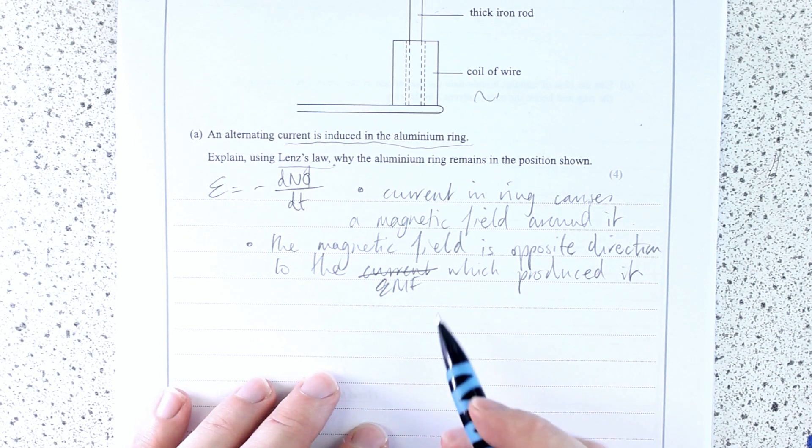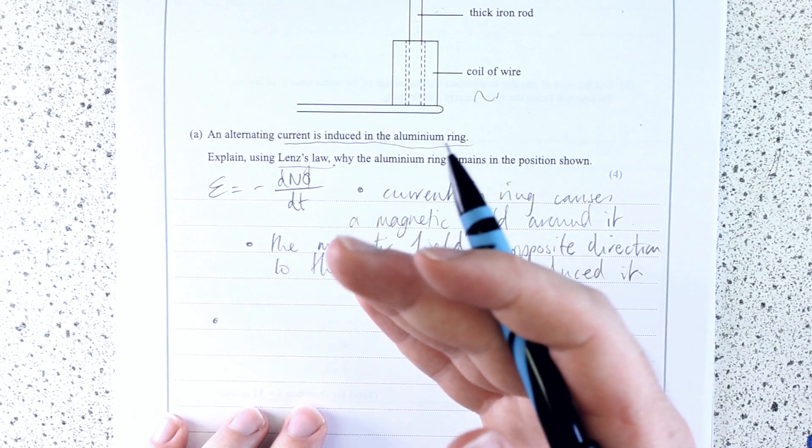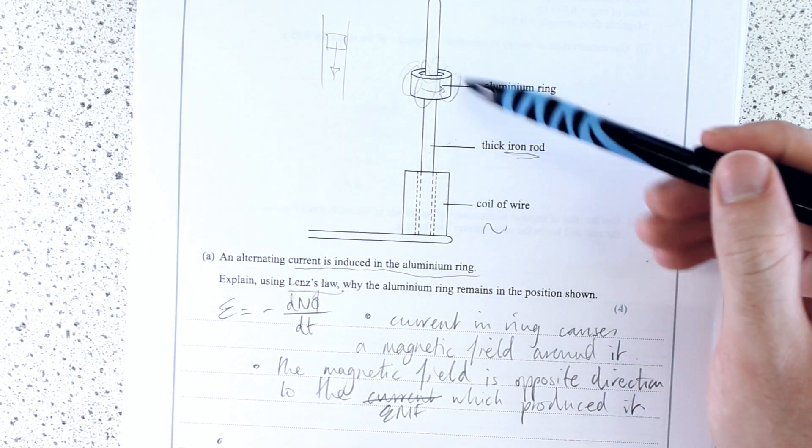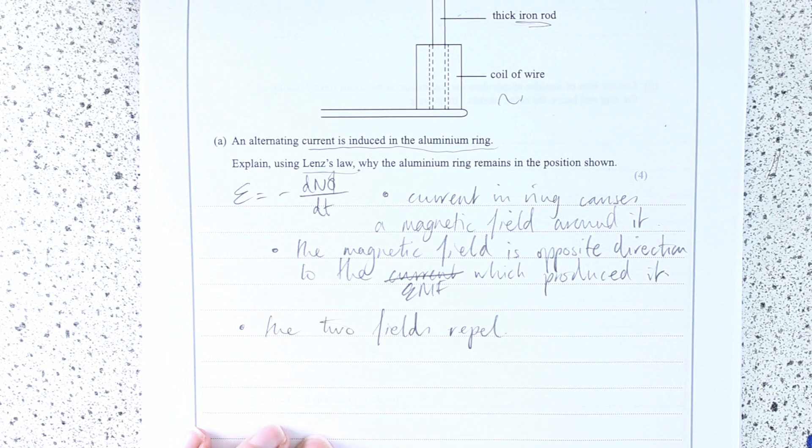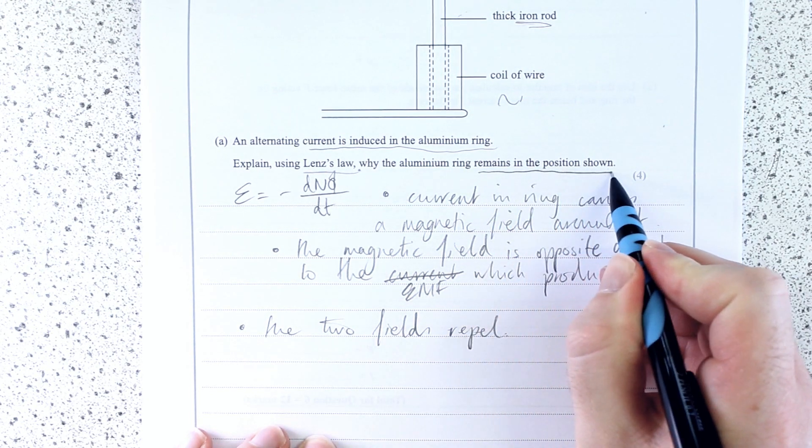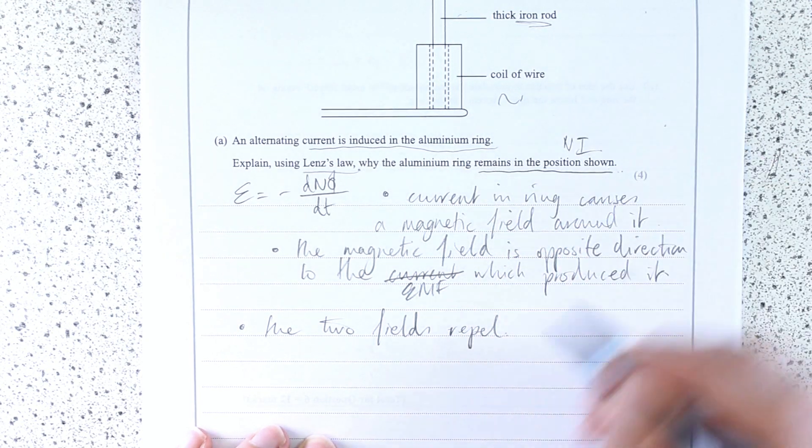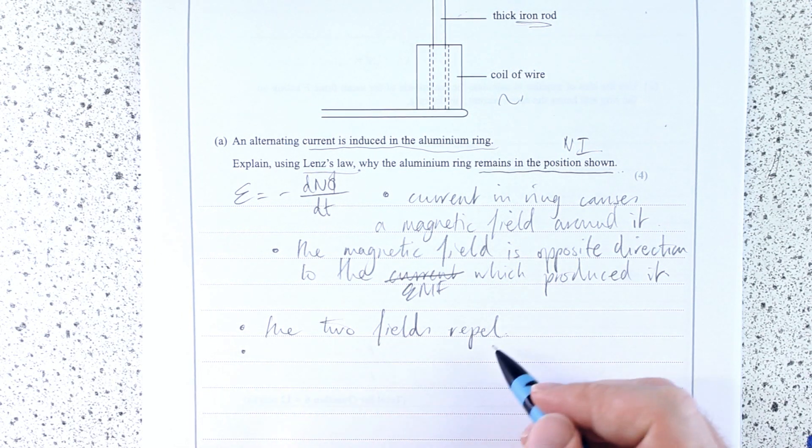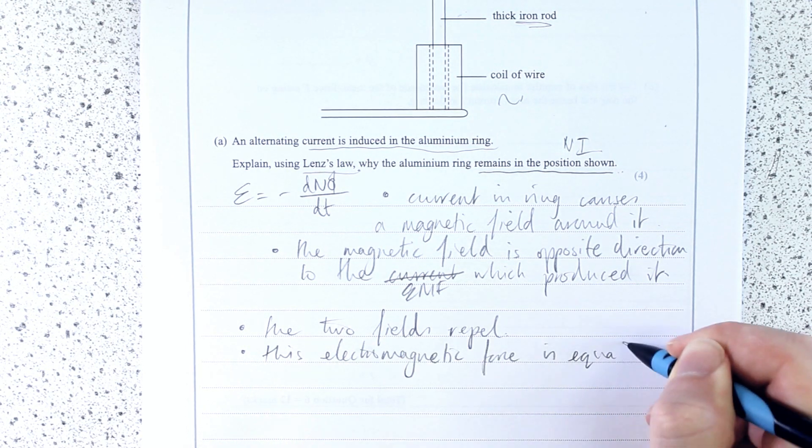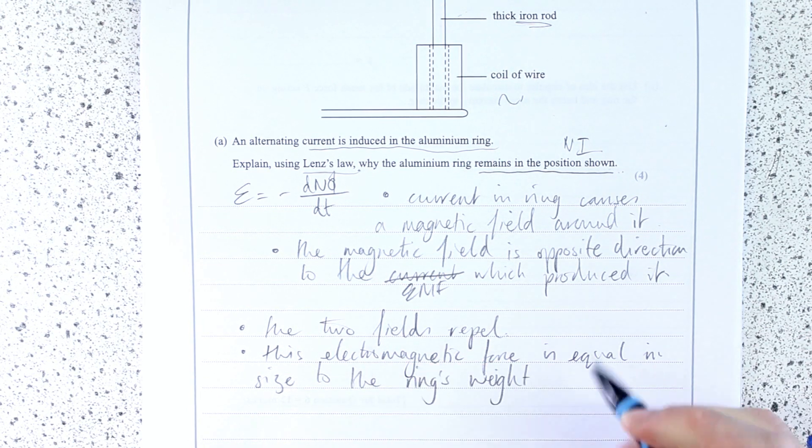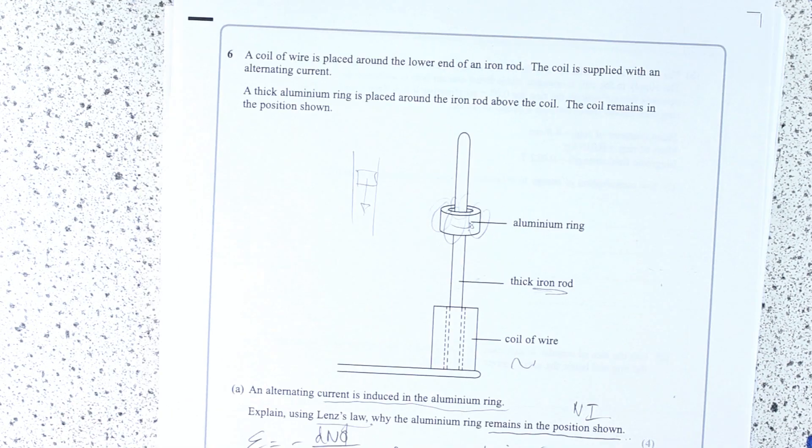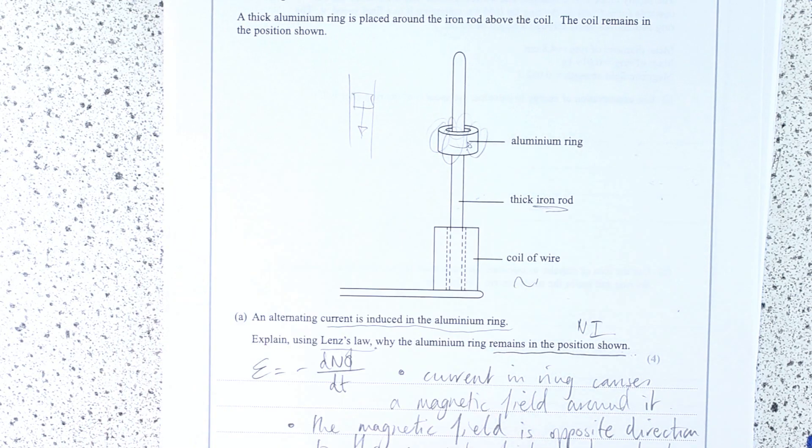Next thing to say, these fields repel. So the two fields interact, and they repel. So the magnetic field in this core, this iron rod, repels the magnetic field that I'm in the ring. And now there's a last little bit here, which is actually, why does it remain in the position shown? Well, this is actually Newton's first law that you have to get in here, which is that this force, this repulsive force, this electromagnetic force, equal in size to the ring's weight. The forces are balanced, so it remains where it is. There's no acceleration. I think this is one where we just need to memorize our Lenz's law explanation.